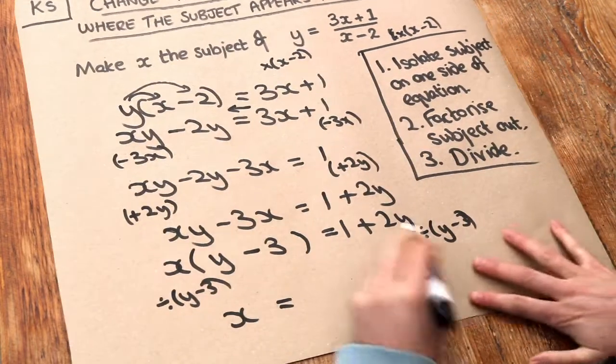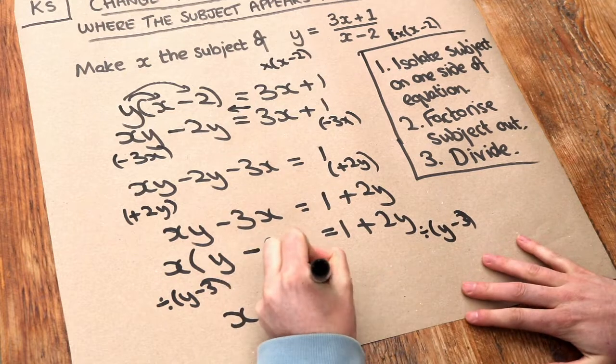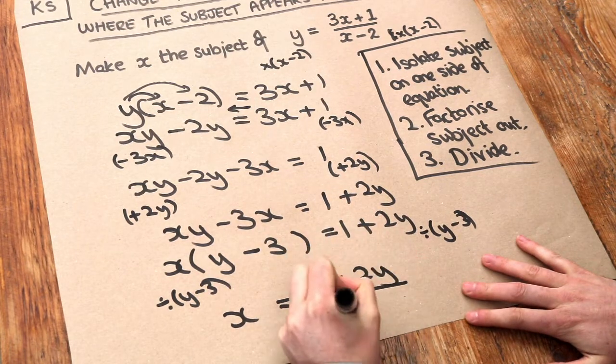And if we divide the right-hand side by y minus 3, we just get a fraction. 1 plus 2y over y minus 3.